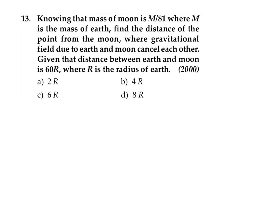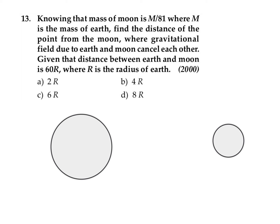We need to find the position where the value of gravitational field becomes equal to zero. Earth and moon are separated by a distance given as 60r — the distance between their centers. Taking the mass of Earth as M, the mass of moon is M/81. Consider a point somewhere between them where the gravitational field is zero. Assume the distance of that point from the moon is x, so the distance from Earth is 60r minus x.